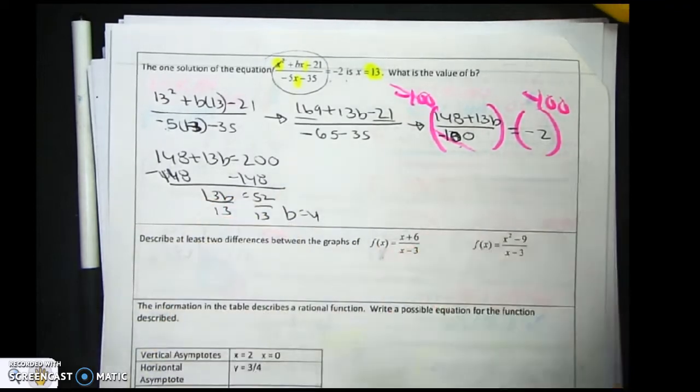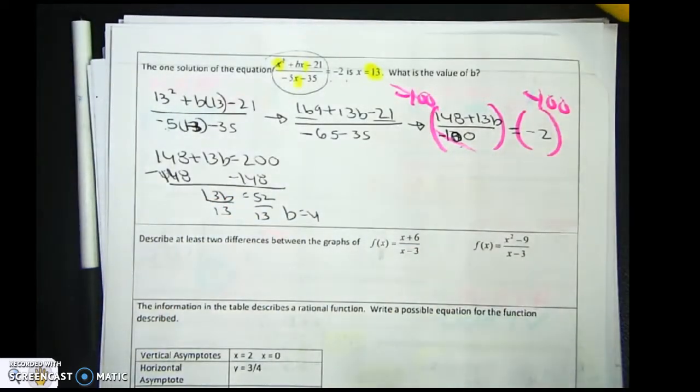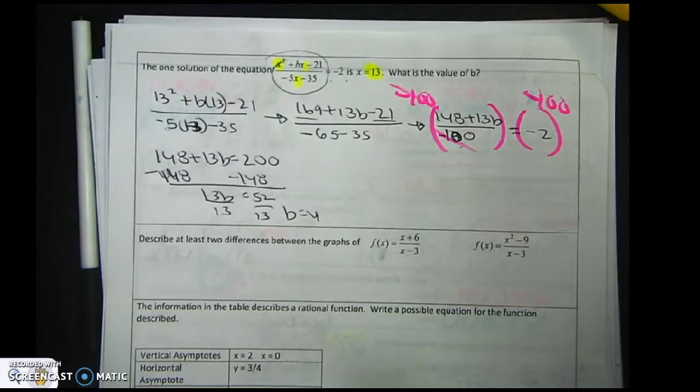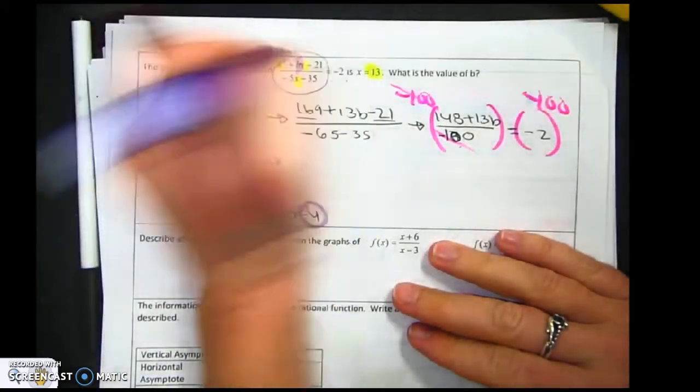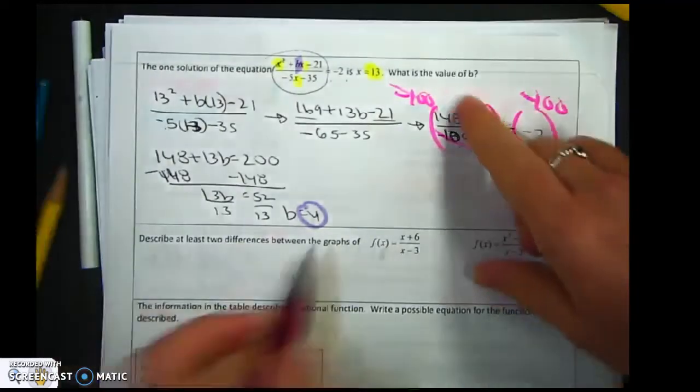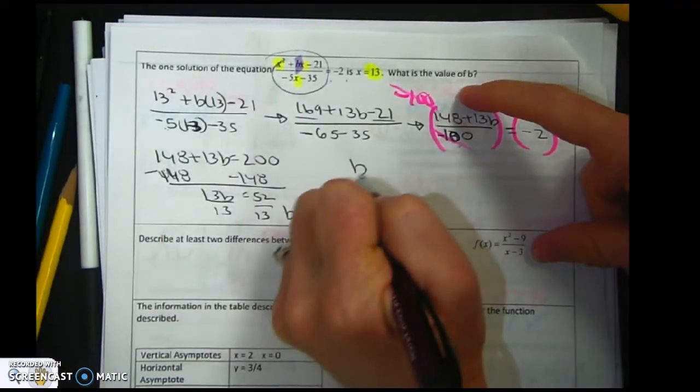13b equals 52 divided by 13. I know I have half a clue, hopefully, because it ends up with a whole number. So now I got my b. So now I'm going to take this b and I'm going to plug it in there. Oh, never mind. That's all I have to do. Let's find the value of b. So b equals 4.